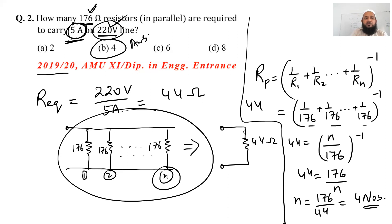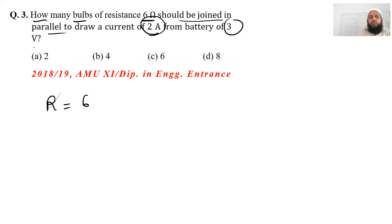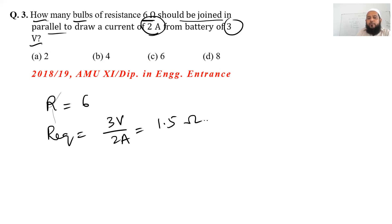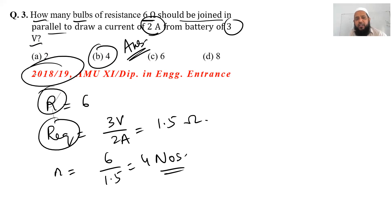Next question: How many bulbs of resistance 6 ohms should we join in parallel to draw a current of 2 ampere from a 3-volt source? Equivalent resistance = 3V / 2A = 1.5 ohms. N = 6 / 1.5 = 4 numbers. So 4 bulbs should be connected in parallel.